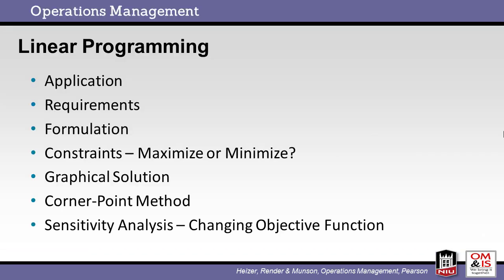Linear Programming. In this unit, we will discuss linear programming. We will explain the application and requirements to use this method. We will create the appropriate formulas for the model, including the objective function and the constraints. To solve these equations, we will start with a graphical method and then use the corner point method. Finally, we will review methods to address changing parameters, including changing the objective function along with sensitivity analysis.